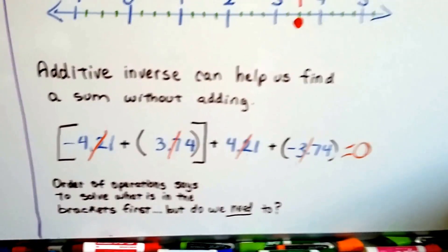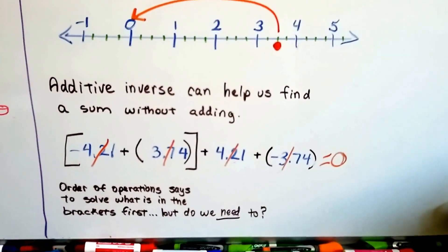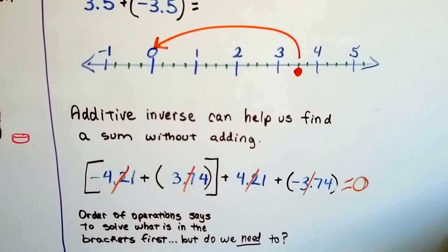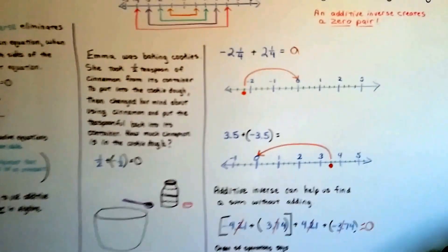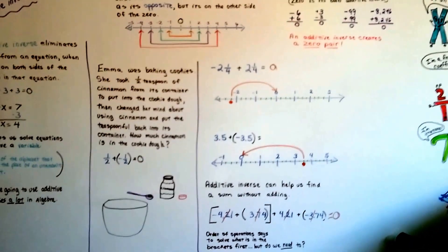So aren't additive inverses great? Aren't zero pairs great? They save us from doing math. They help us find out what a variable is equal to. Love them. Additive inverses are awesome. Zero pairs are awesome.